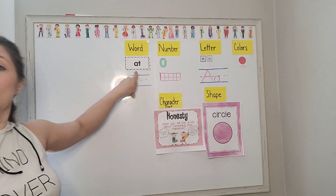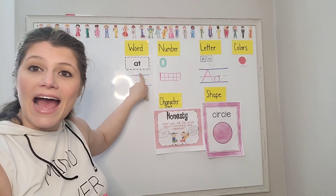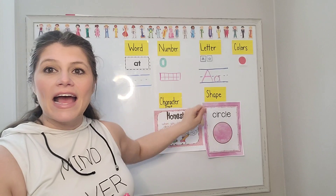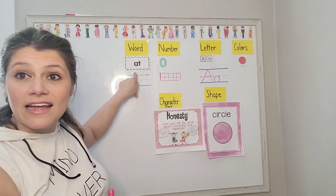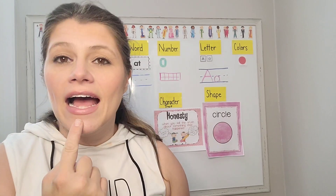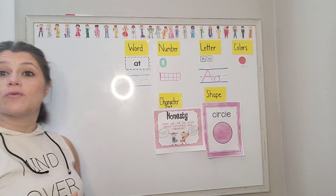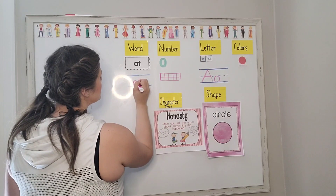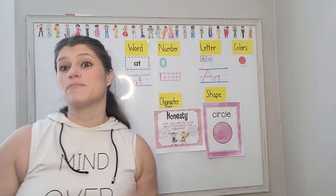Next we're going to talk about our word of the day. Our word of the day is 'at.' We just talked about our letter A and that it can make the sound 'A' or 'ah.' Listen carefully — when we say the word 'at,' you hear that 'ah' sound. We hear our A at the beginning. At. Can you say 'at'? At. We are going to practice writing 'at.' We're going to do a lowercase a because 'at' is not someone's name and it's not a sentence. So we're going to do a lowercase a and write a T — we haven't talked about T yet a lot, but we'll get there.